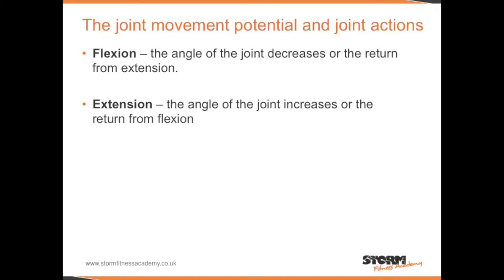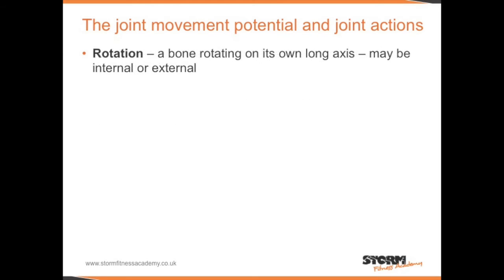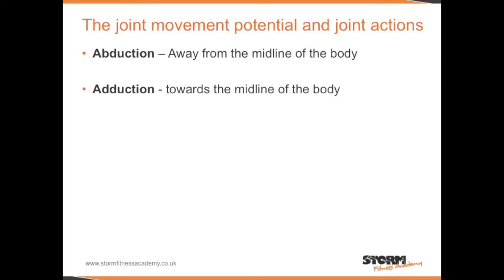Flexion is where the angle of the joint decreases, or the return from extension. Extension is where the angle of the joint increases, or the return from flexion. Rotation is a bone rotating on its own long axis — it may be internal or external. Abduction is movement away from the midline of the body. Adduction is movement towards the midline of the body.